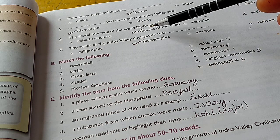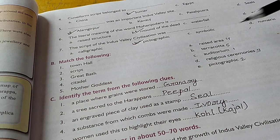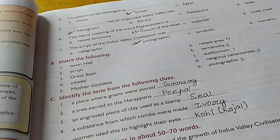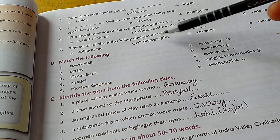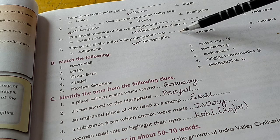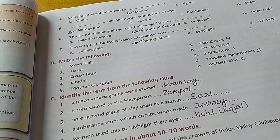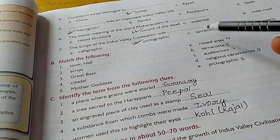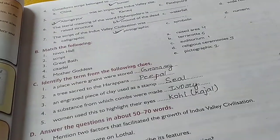Number six: The literal meaning of the word Mohenjo-Daro is mount of the dead. The last one: the script of the Indus valley civilization was pictographic. That is the pictographic script.